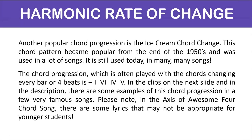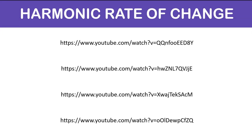Another popular chord progression is the Ice Cream Chord Change. This chord pattern became popular from the end of the 1950s and was used in a lot of songs, and is still used today in many, many songs. The chord progression, which is often played with the chords changing every bar or four beats, is 1, 6, 4, 5. There are some examples of this chord progression in some very famous songs in the clips linked in the description. Please note, in the Axis of Awesome four-chord song, there are some lyrics that may not be appropriate for younger students. In the key of C major, the order of 1, 6, 4, 5 is C, A minor, F, G.